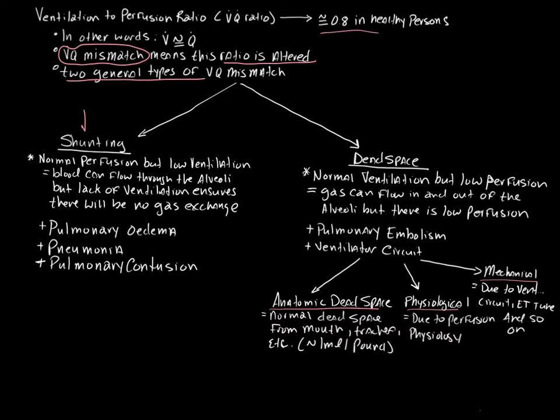There is something called shunting and something called dead space. When we say somebody has shunting, pulmonary shunting, they have normal perfusion. So blood flow to the lungs is normal, but the ventilation is altered. Blood can flow through the alveoli, but lack of ventilation ensures that there's no gas exchange.